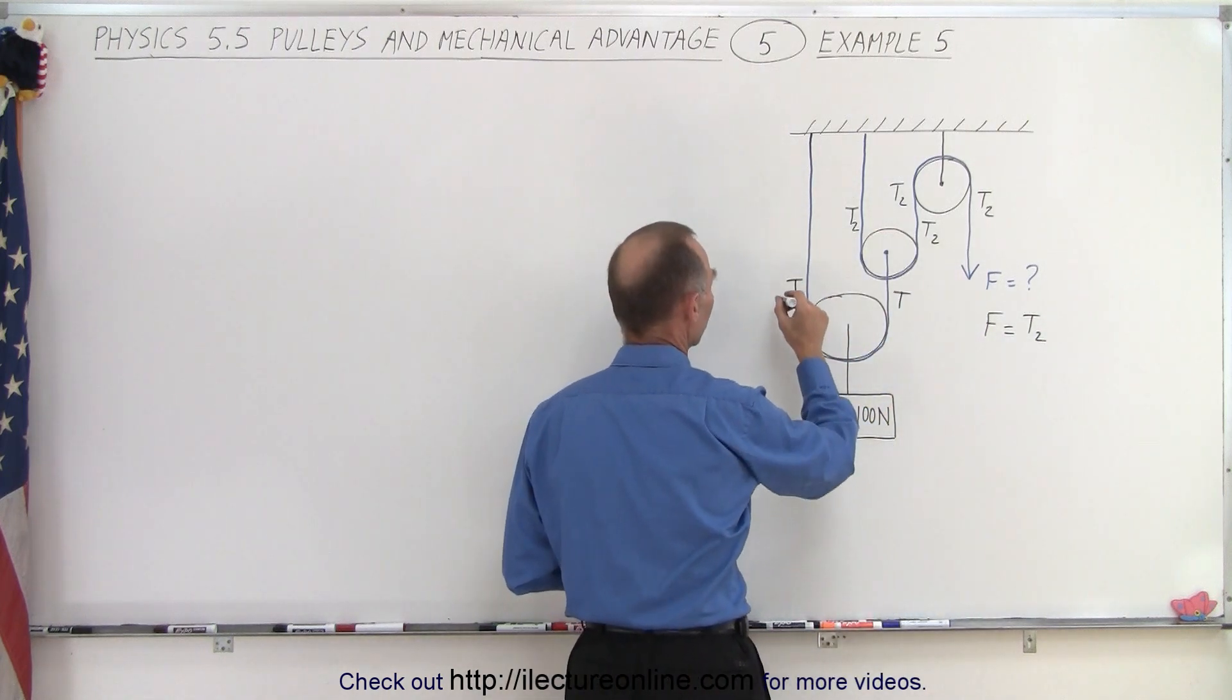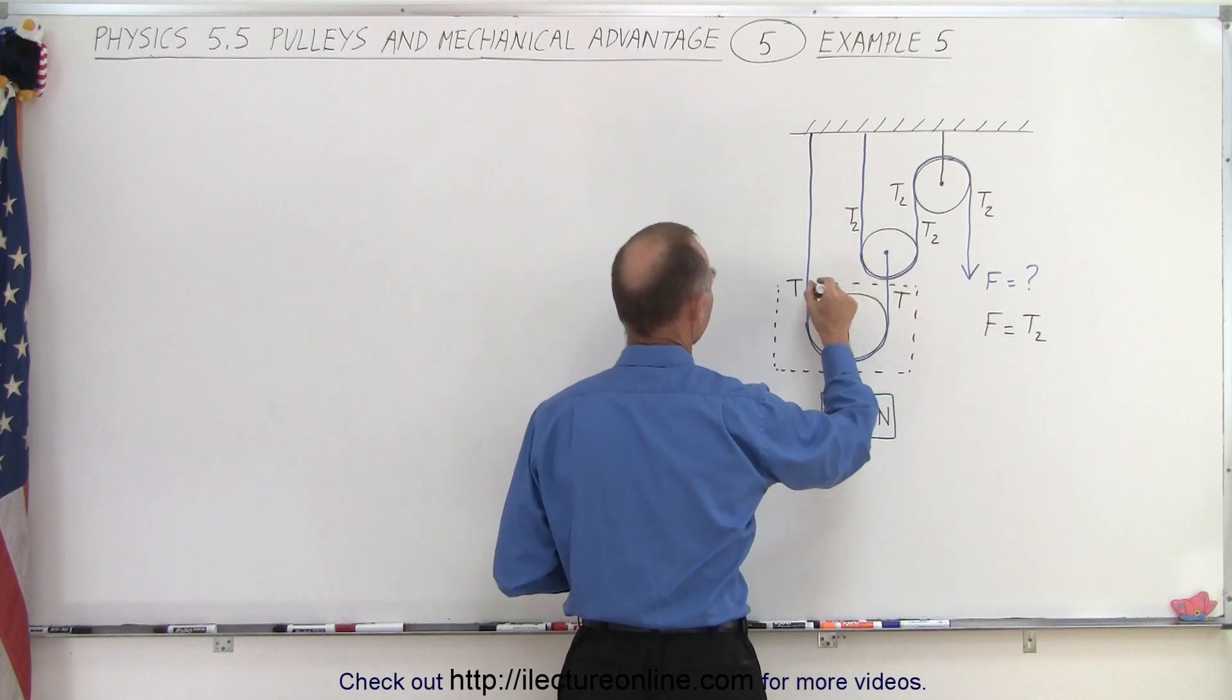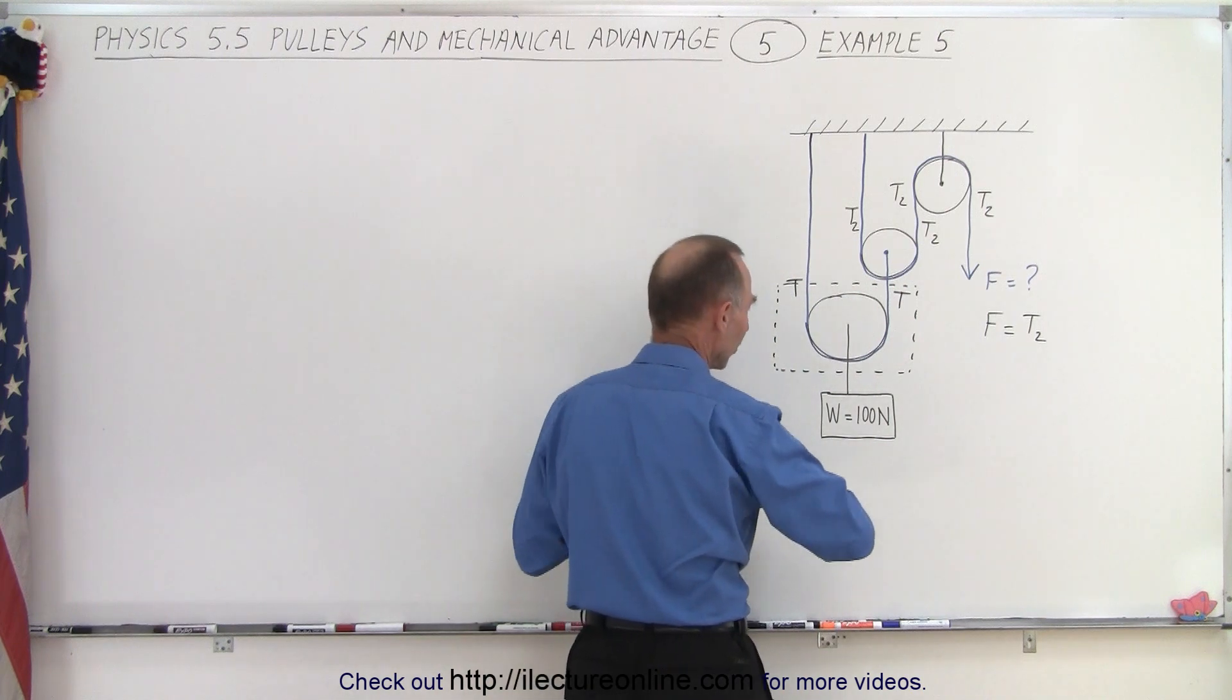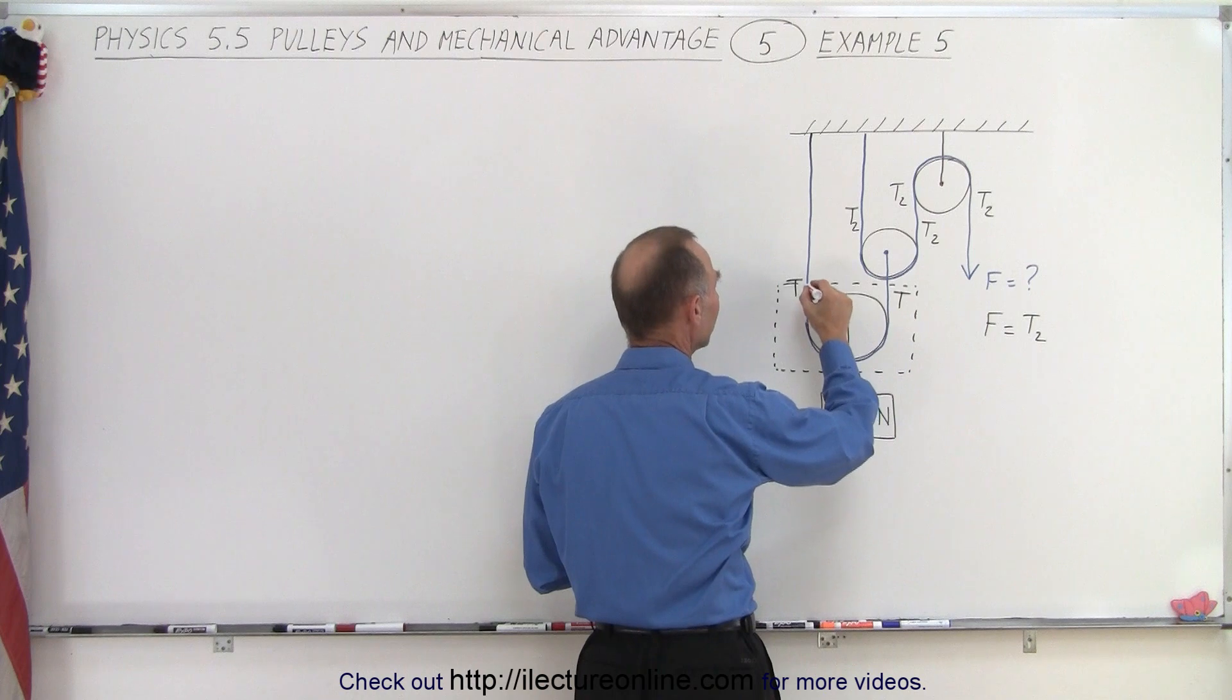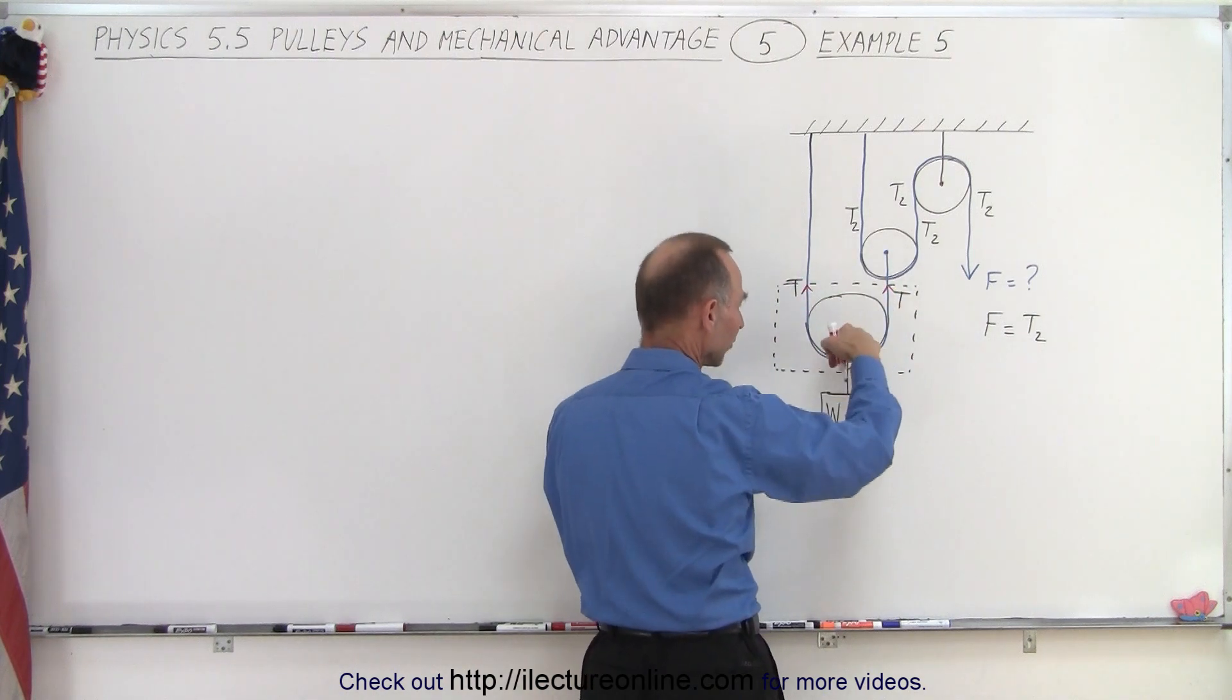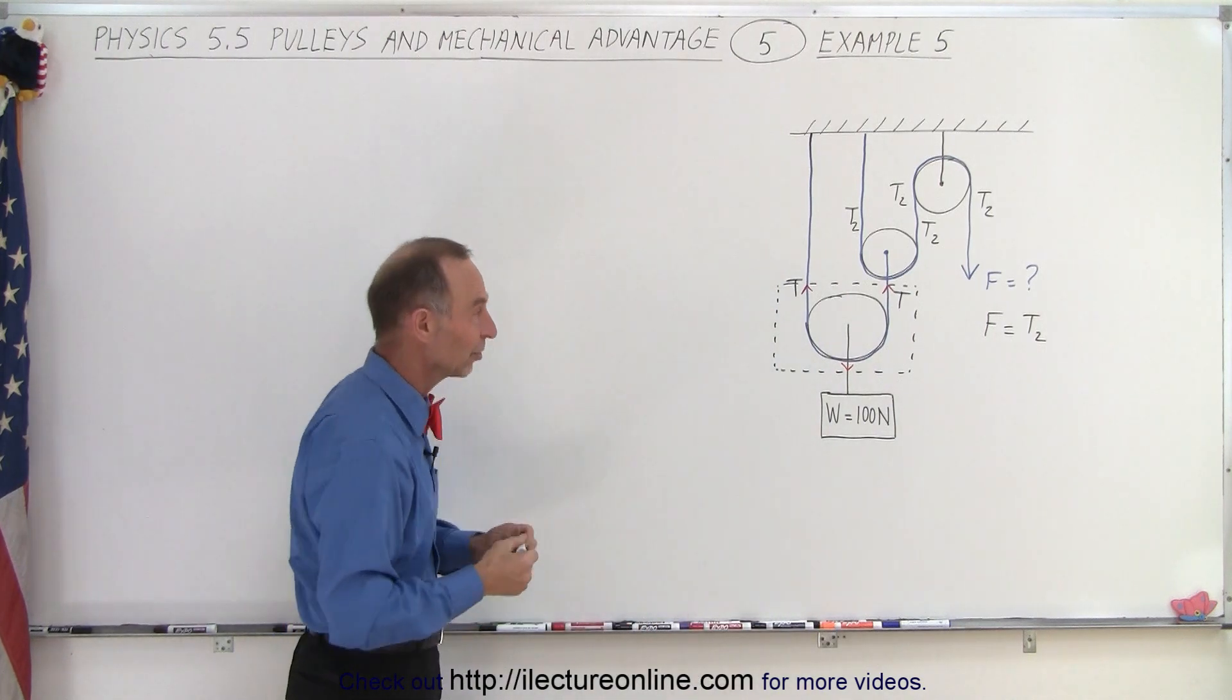So what we're going to do here is we're going to draw a free body diagram around this pulley right here. We do that because now we can say that the force pulling down on the object inside a free body diagram is equal to the sum of the two forces pulling up. So we have two forces pulling up, one force pulling down and we know that in a static situation they must add up to zero.